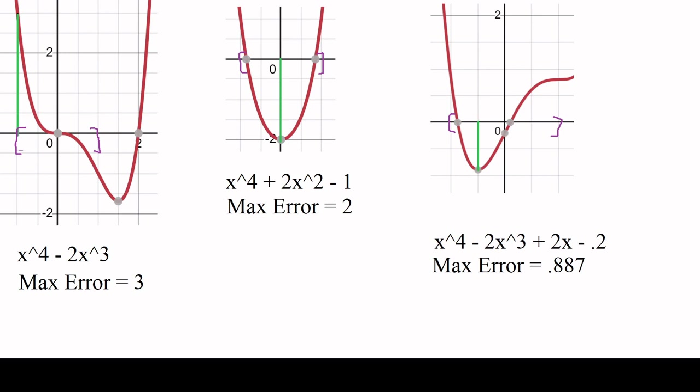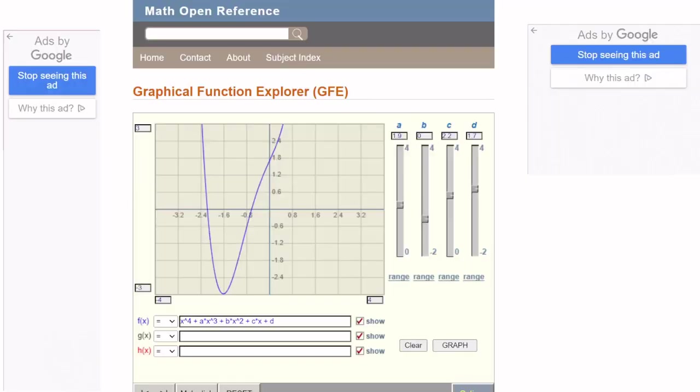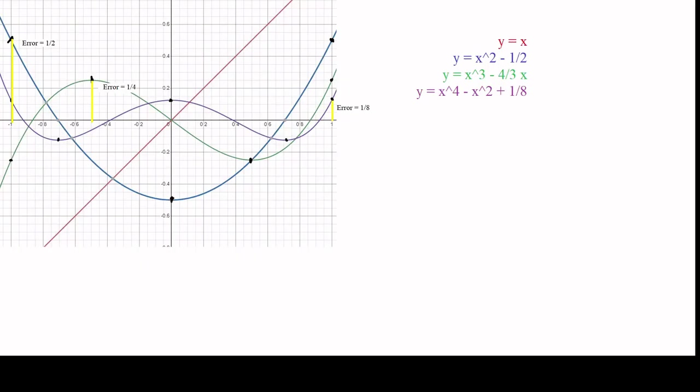I'd like you to pause and click on the link to the graphing applet in the description. Enter into the first box exactly what I have, don't forget the asterisks, and play around with the sliders. See what the flattest polynomial you can find is. The solution in this case can be found with the polynomial x^4 - x^2 + 1/8, and the max error is 1/8. In fact, I'll go ahead and show you the first four Chebyshev polynomials on the set -1 to 1. The pattern here is that the error of the nth Chebyshev polynomial is 1/2^(n-1).